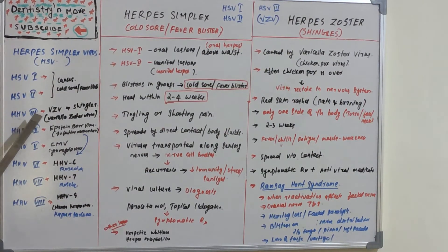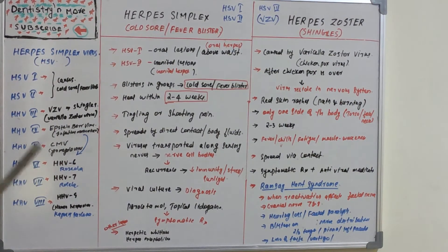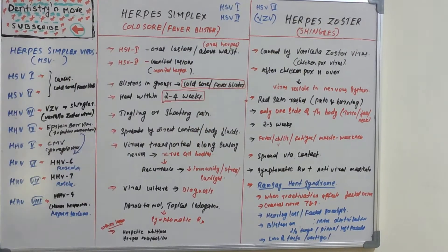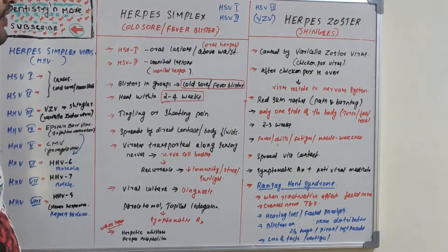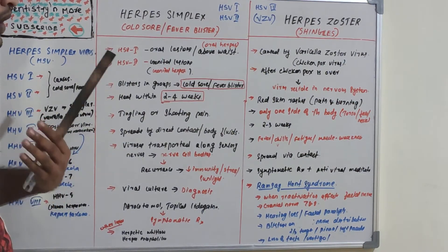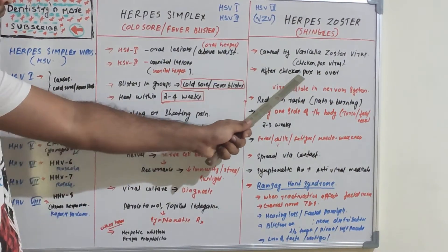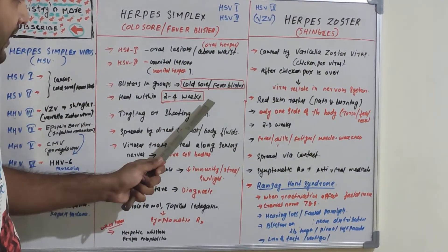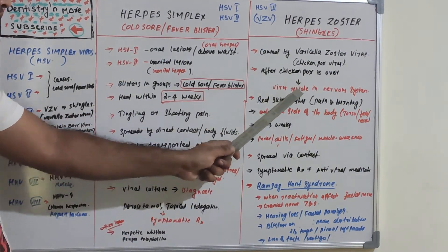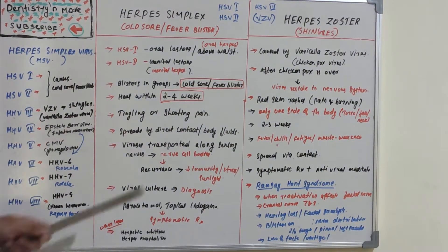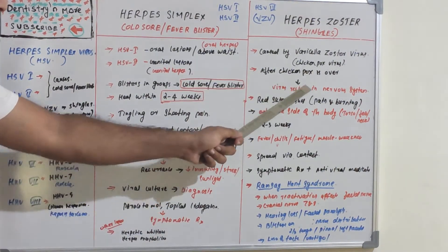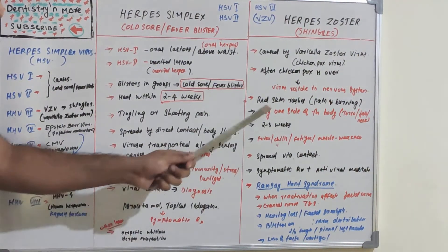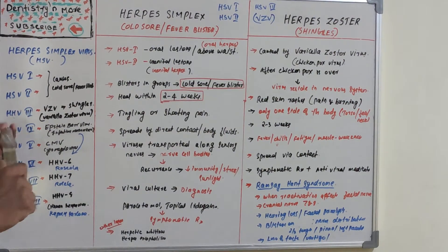Herpes zoster is caused by the third category virus — varicella zoster virus — which is the same virus that causes chicken pox. In shingles, a person who previously had chicken pox can get this disease. Shingles is a reactivation of the latent chicken pox virus present in the nervous system. After the patient has recovered from chicken pox, the virus resides in the nervous system and can reactivate, causing red skin rashes with pain and burning sensation.